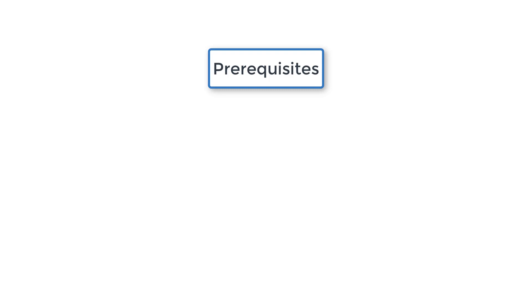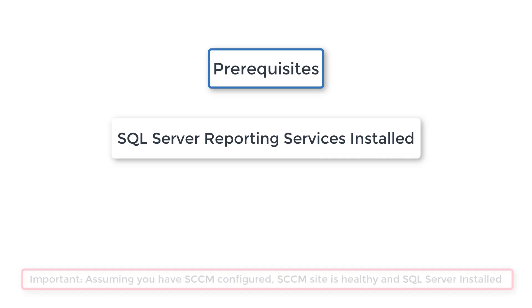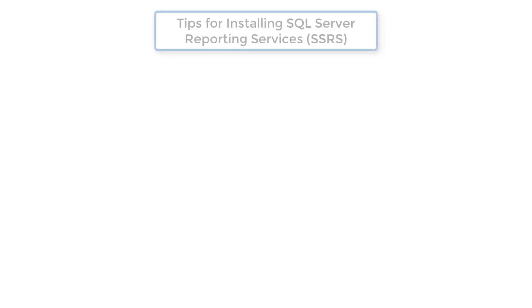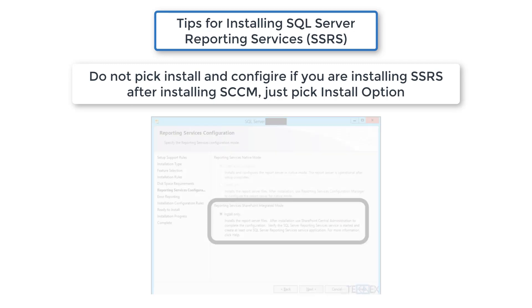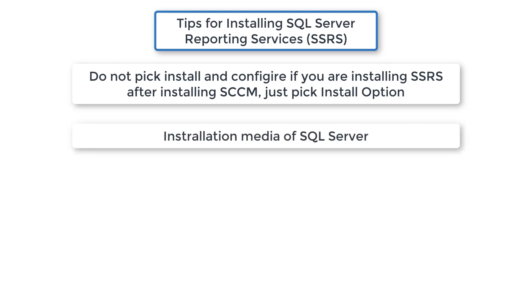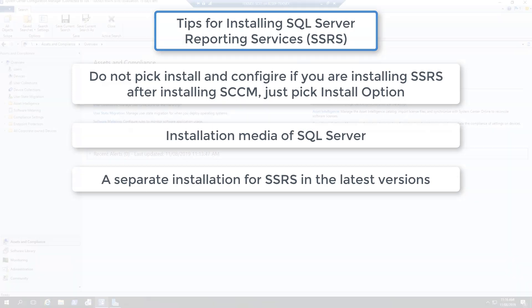Now let's look at the prerequisites. The main prerequisite is the SQL Server Reporting Services feature installed on SQL Server. In our video series we had selected the install and configure option while installing this feature. If you have not installed this feature, go ahead and install it on your SQL Server, but make sure when you install it, do not pick install and configure — just pick the install option. You can use the installation media of SQL Server downloaded from Microsoft Download Center. However, in the latest versions you might have to download a separate installer for Reporting Services.